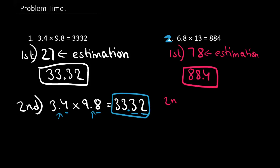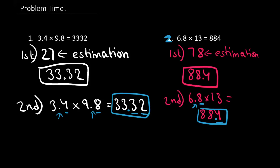Now let's try the second method. How many decimal points are there? I see only one. How many numbers are there after the decimal point? There's only one. So that means our decimal point will be after the second 8. Our answer is 88.4.